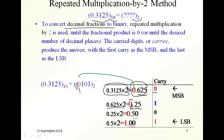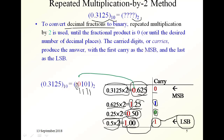We take this carry into this position, and then we multiply this by 2. We then get the answer with carry 0, and this 0 goes into this position. Then we multiply 0.5 by 2 again, and we get this answer. This here is the carry, which goes to this position. This final carry is the least significant bit in the binary number, while this one is the most significant bit in the final binary number.